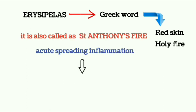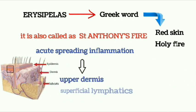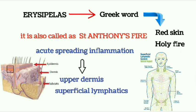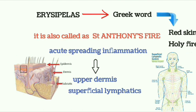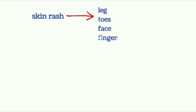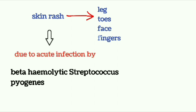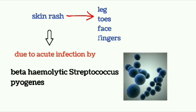Erysipelas is an acute spreading inflammation. The inflammation occurs in the upper dermis and superficial lymphatics. It is a typical skin rash, more commonly presenting on legs, toes, face, and fingers due to acute infection. It is caused by the beta-hemolytic Streptococcus pyogenes.